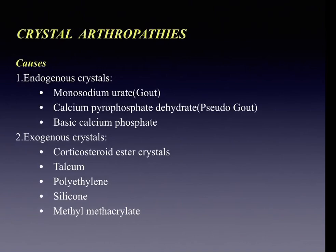Crystal arthropathies arise from endogenous crystals: monosodium urate resulting in gout, and calcium pyrophosphate dihydrate resulting in pseudo gout. These endogenous and exogenous crystals produce disease by triggering a cytokine-mediated process that destroys the cartilage.